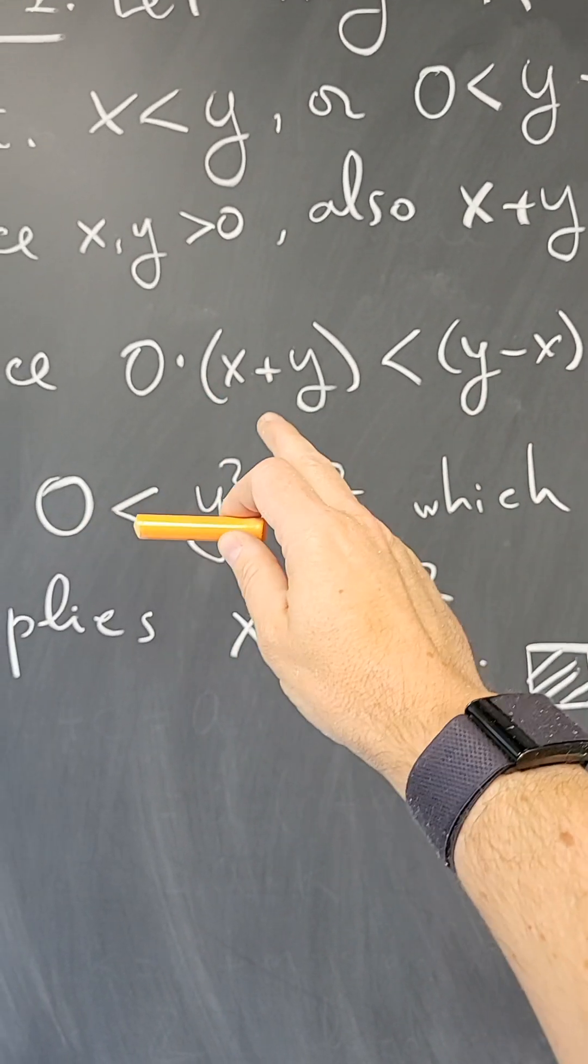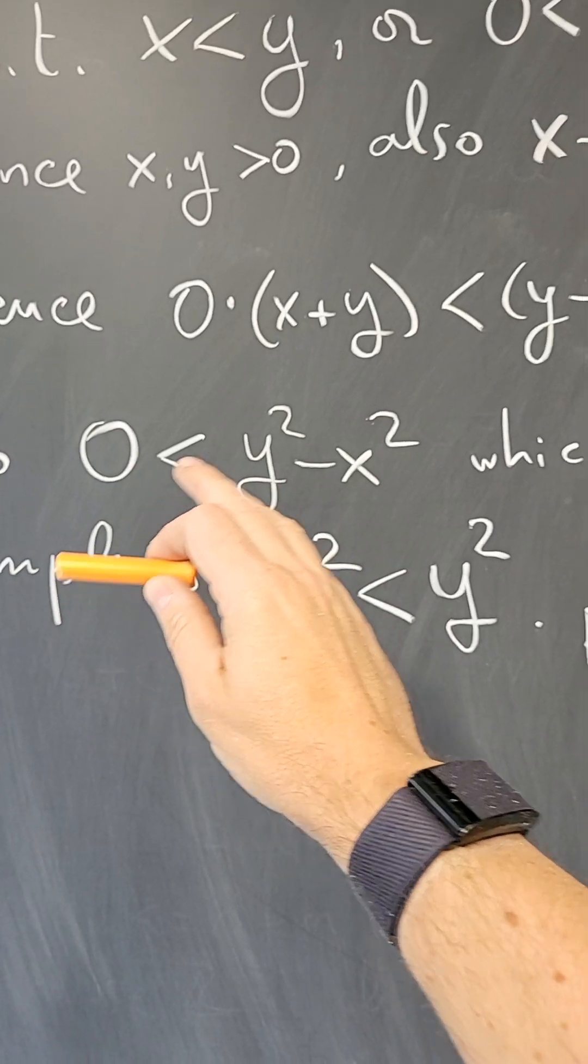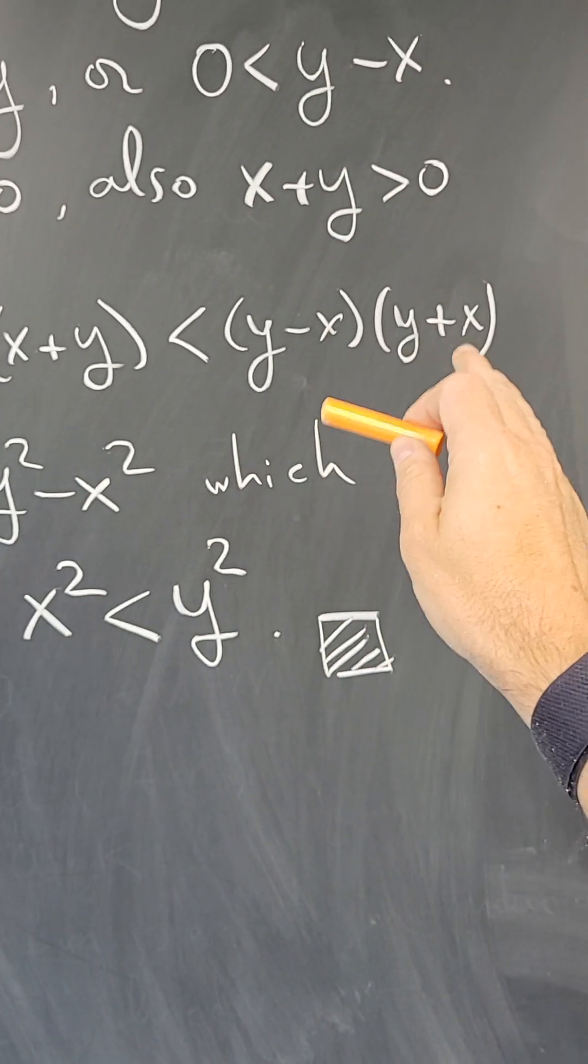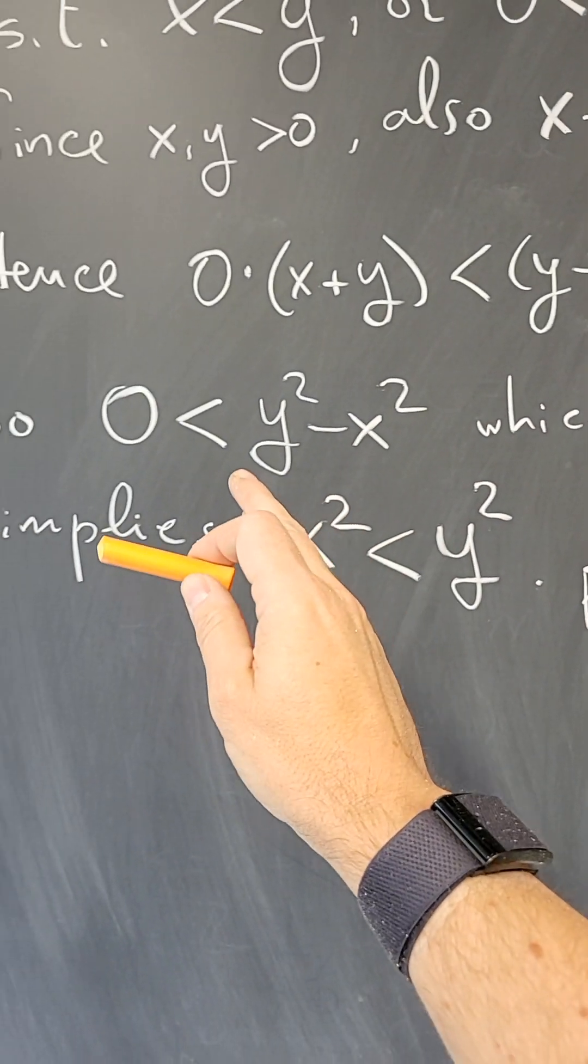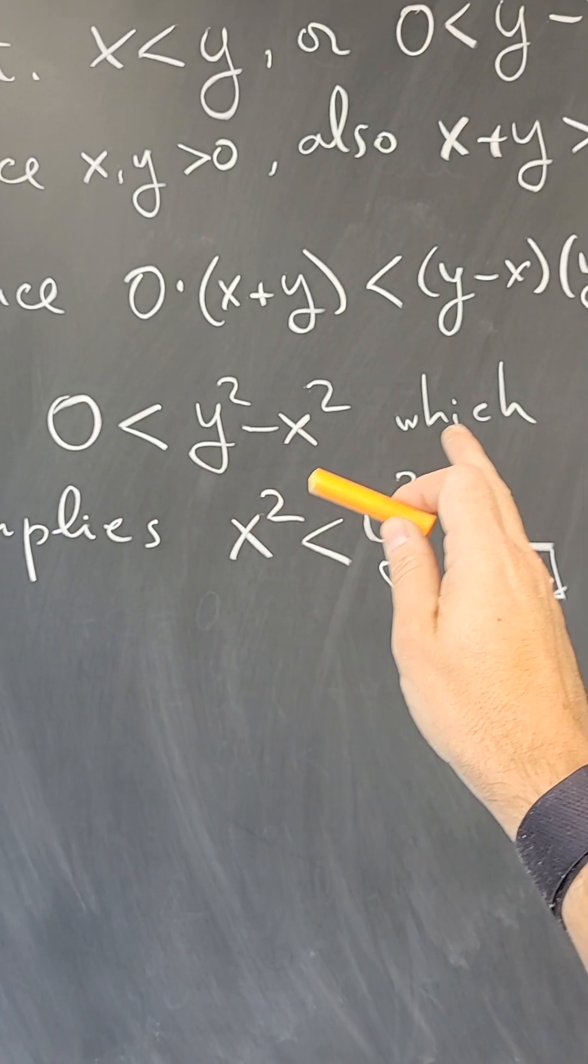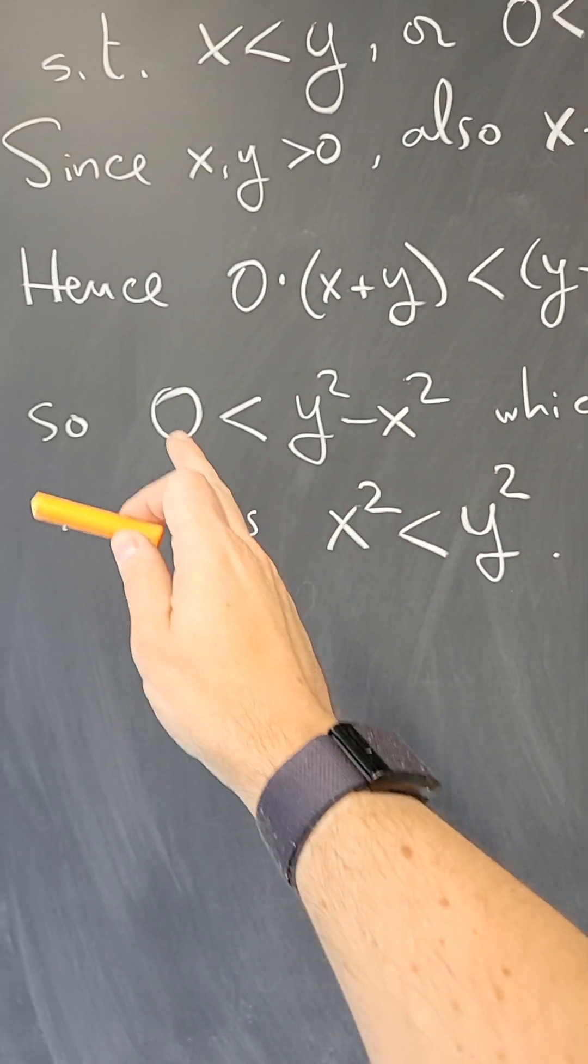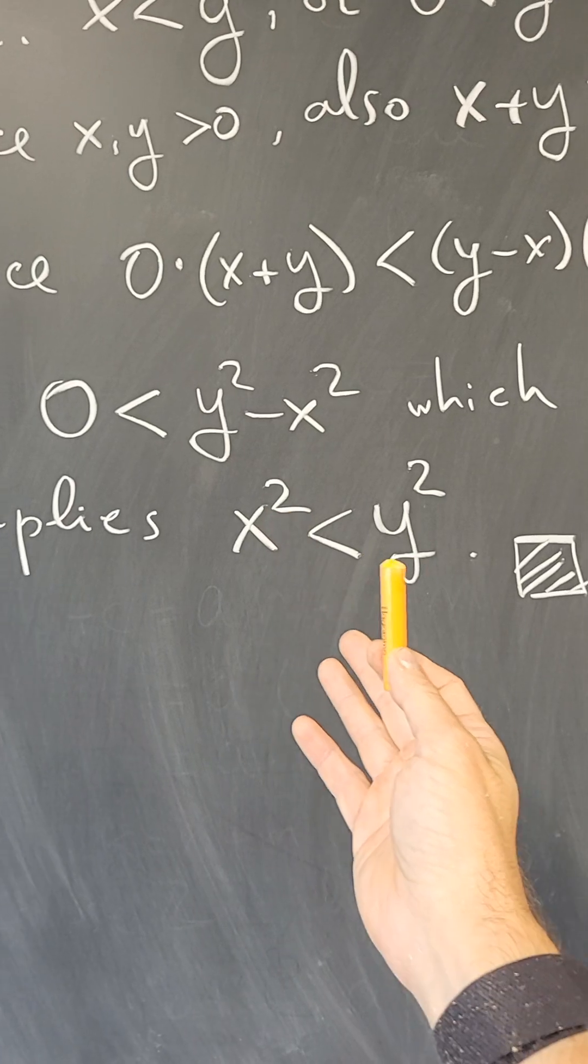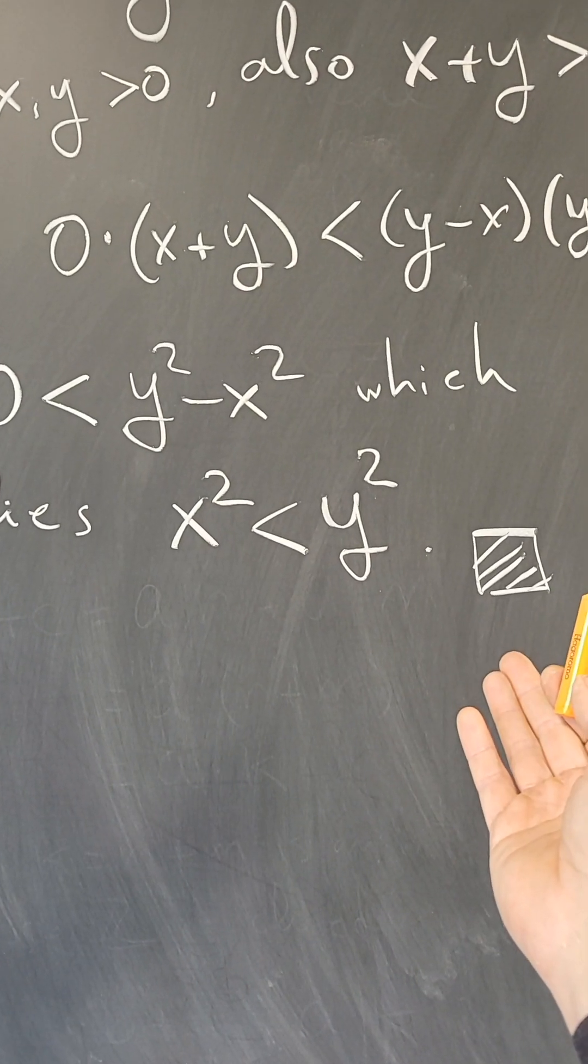Now this is zero, anything times zero is zero, and the difference times the sum is the difference of squares, so I get that zero is less than y² - x², which implies if I bring the x² to the other side that x² is less than y², which is what I wanted to prove.